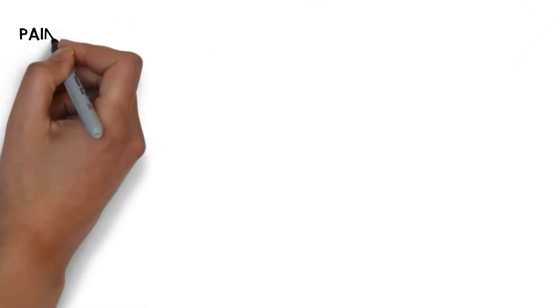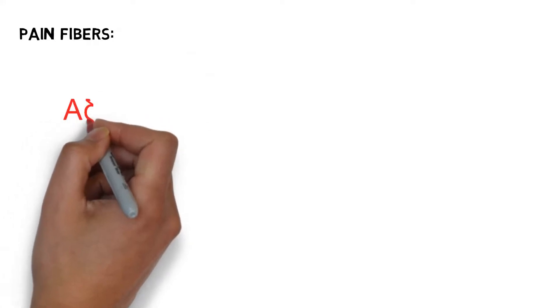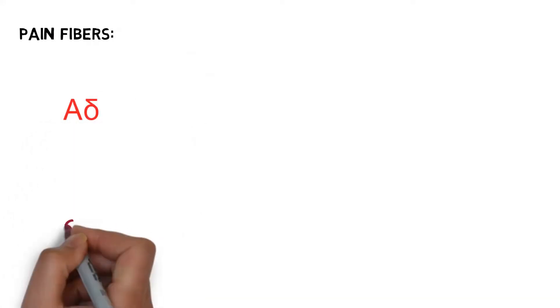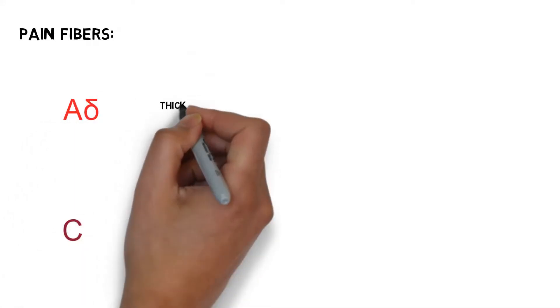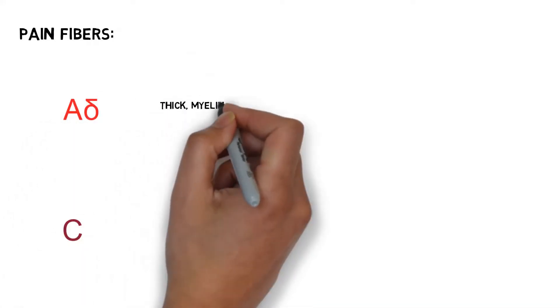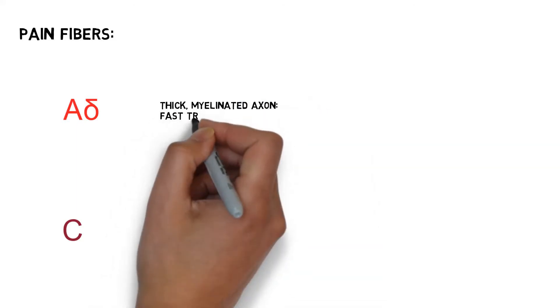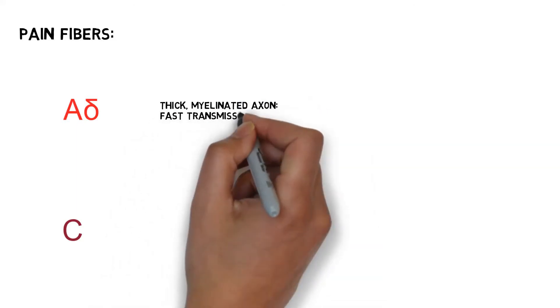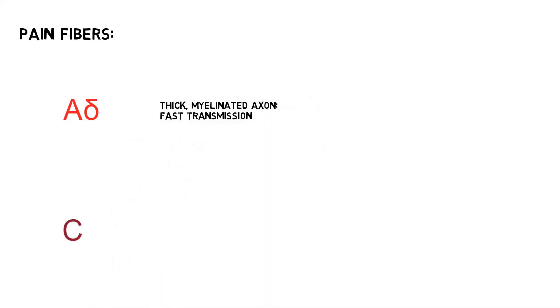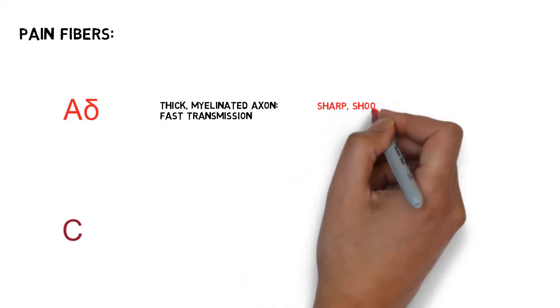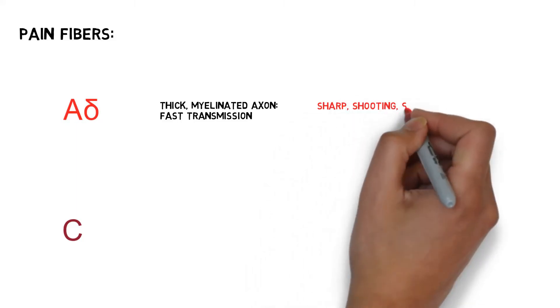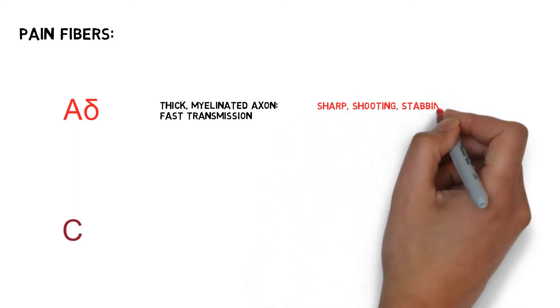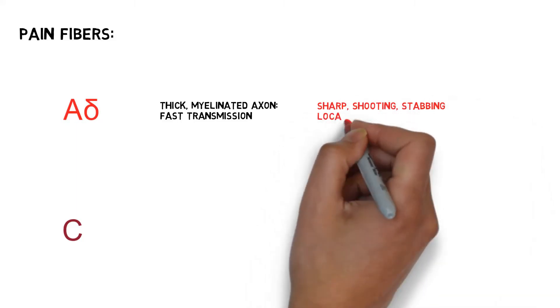The two fiber types for pain reception are the A-delta fiber and the C-fiber. The A-delta fiber has a thick axon that is myelinated, so according to cable theory the axon's transmission is fast. The pain that is felt with the A-delta fiber tends to be sharp, stabbing, and readily localized.